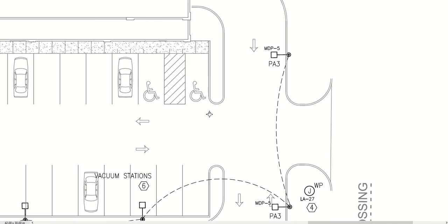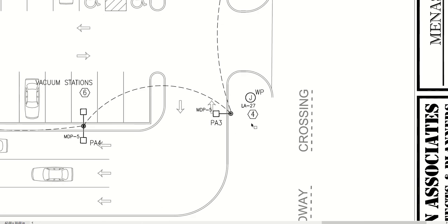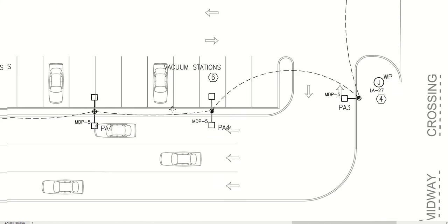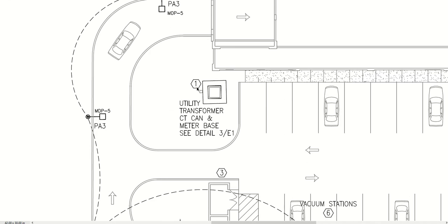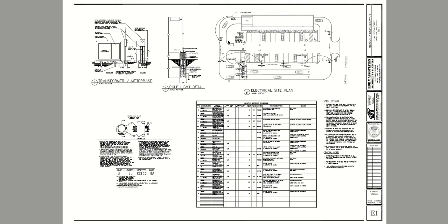We do have a waterproof connection here for signage. And then finally, we show the utility transformer location on the site itself — just a little bit more different information there. We also have the standard details and the light fixture schedule, and we'll get into those as we move through the series.